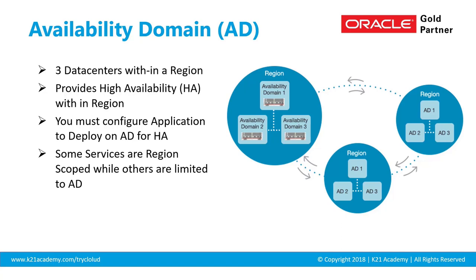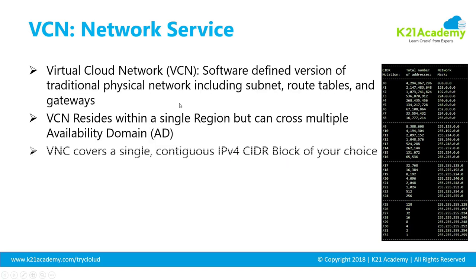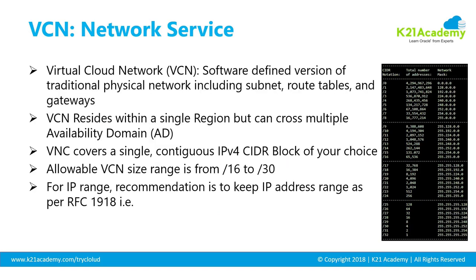Now let's look at virtual cloud network. The dotted line in the diagram represents one virtual cloud network. VCN is nothing but a software-defined version of your traditional physical network — similar to whatever network you create on-premise, but in a software version on Oracle public cloud. VCN resides within a region.